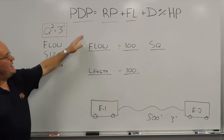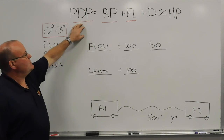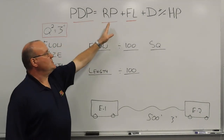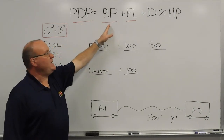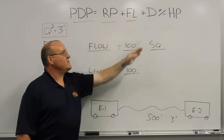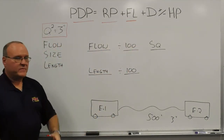We're going to identify, to get our pump discharge pressure, the residual pressure that we need, and then calculate for the friction loss using the Q-squared or the hand method.